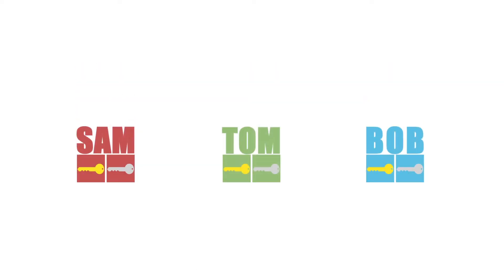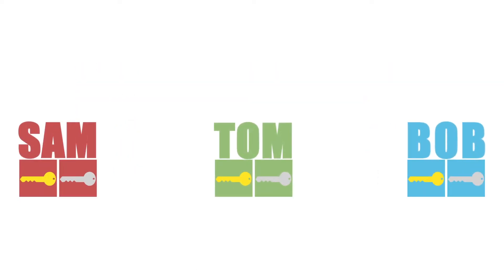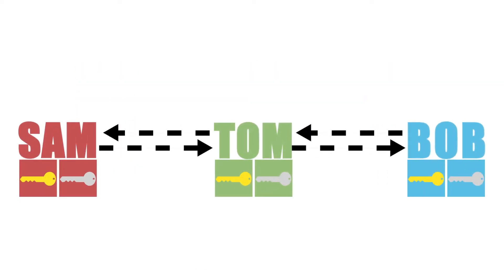Everyone gets a key pair, and they use the keys to communicate with each other. All of this might seem a bit confusing, and since PGP is public key encryption, this makes PGP confusing too. So to make everything clearer, we're going to look closely at how people communicate using PGP.